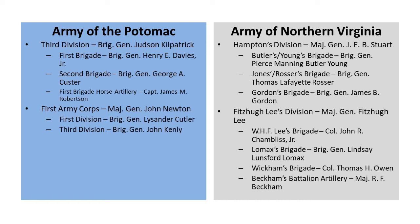A relative of General Fitzhugh Lee owned Buckland Farm, on which much of the battle was fought. Their knowledge of the terrain, local roads, and avenues of approach and escape would prove a great advantage. In numbers, the Confederate cavalry outnumbered the Union with the addition of Fitzhugh Lee's division, which was operating several miles away near Auburn and would come into play after the battle began.